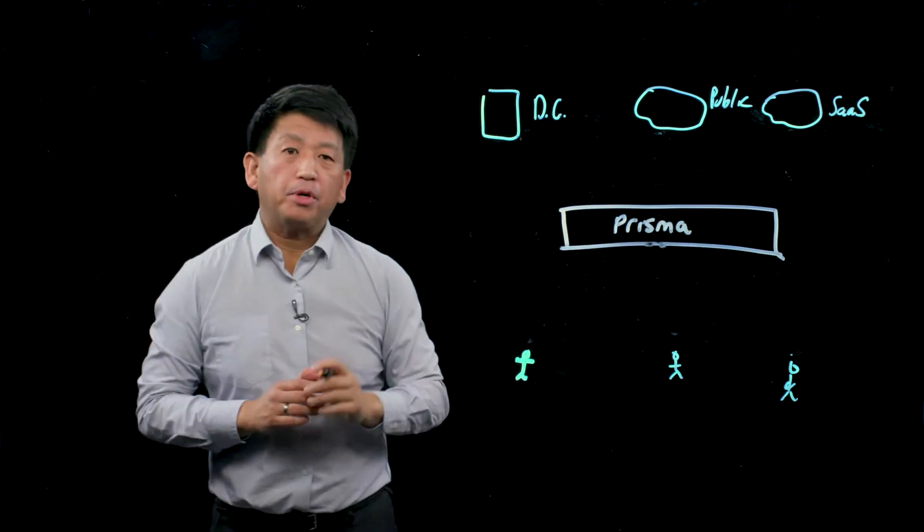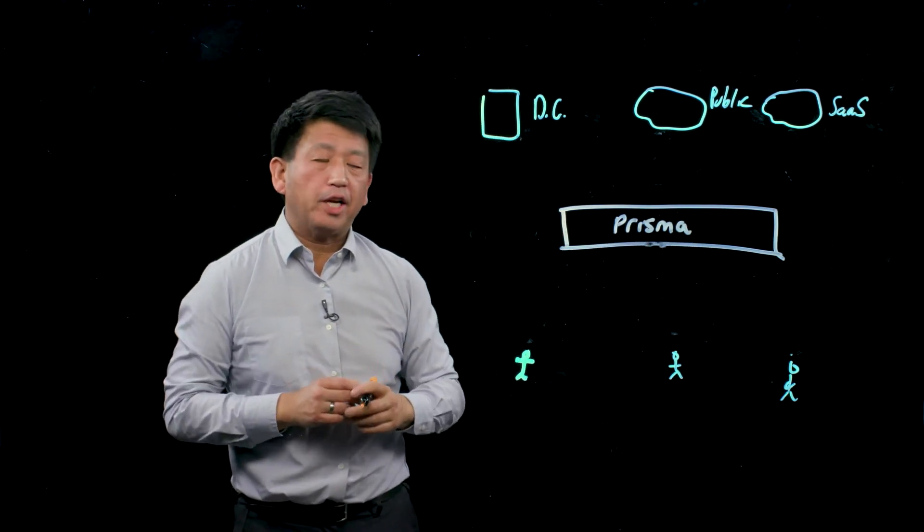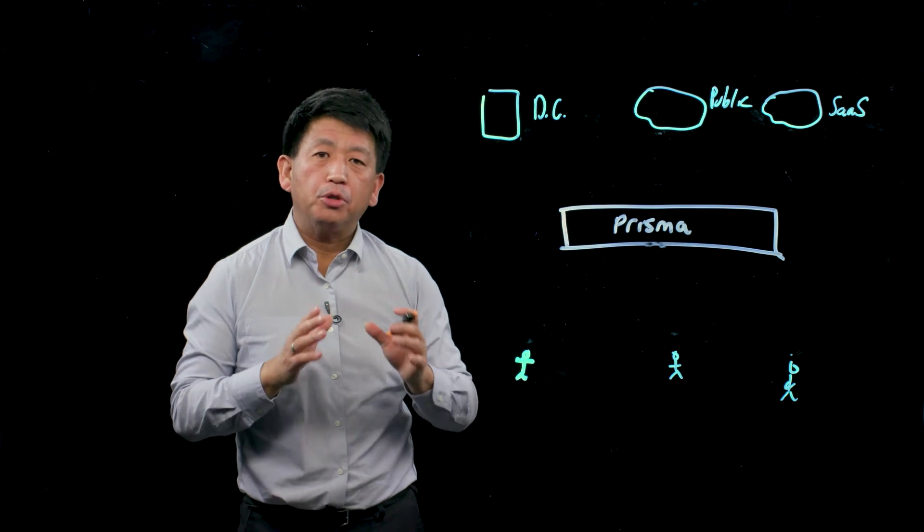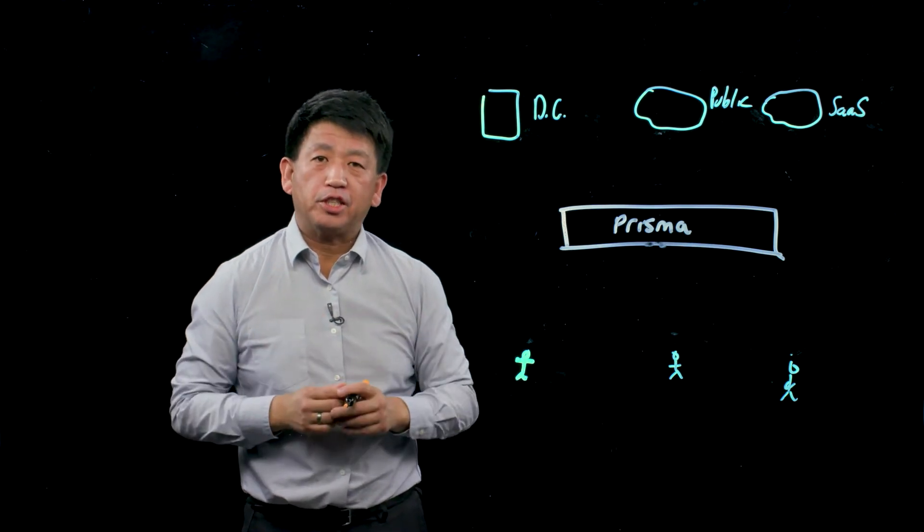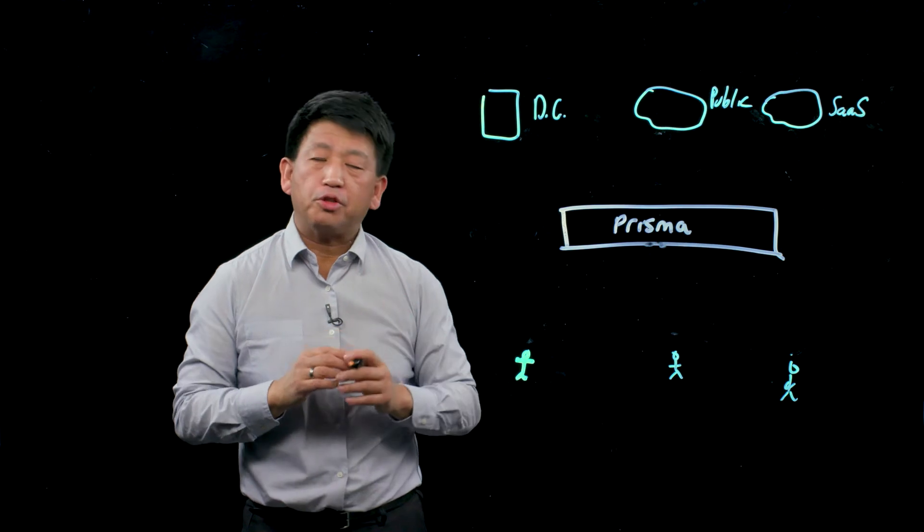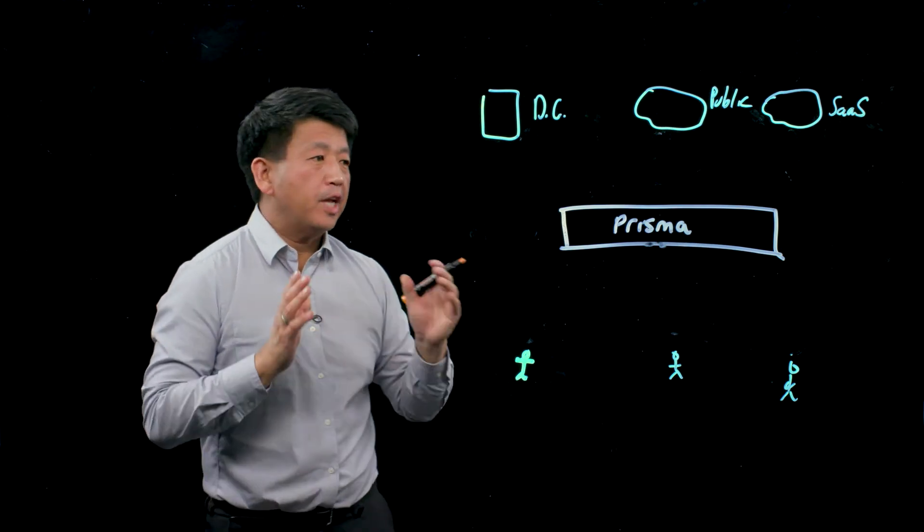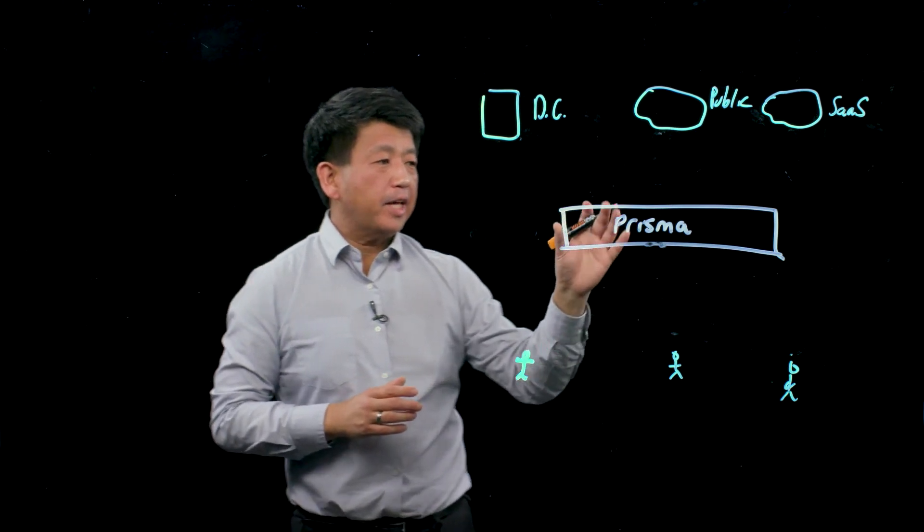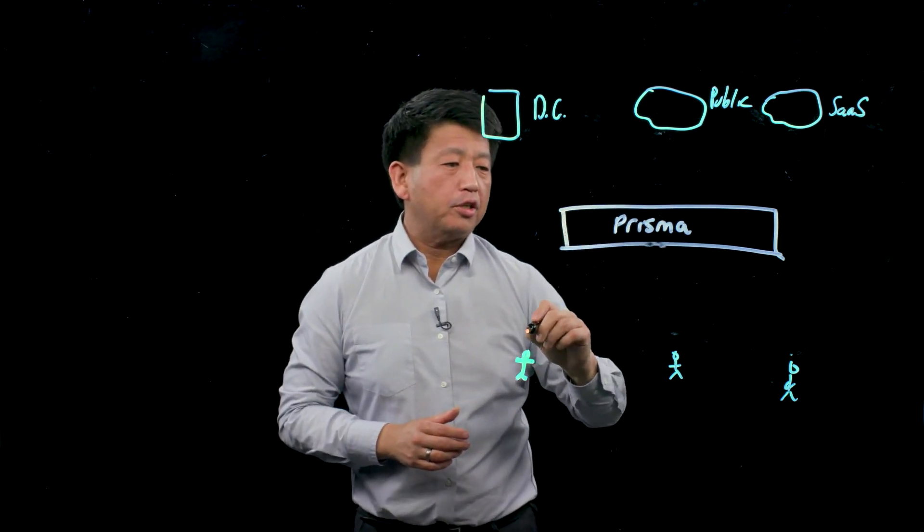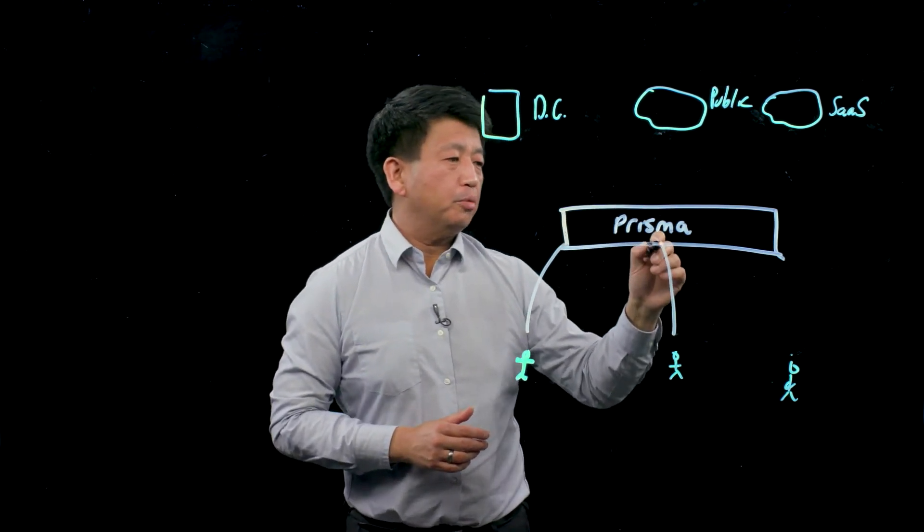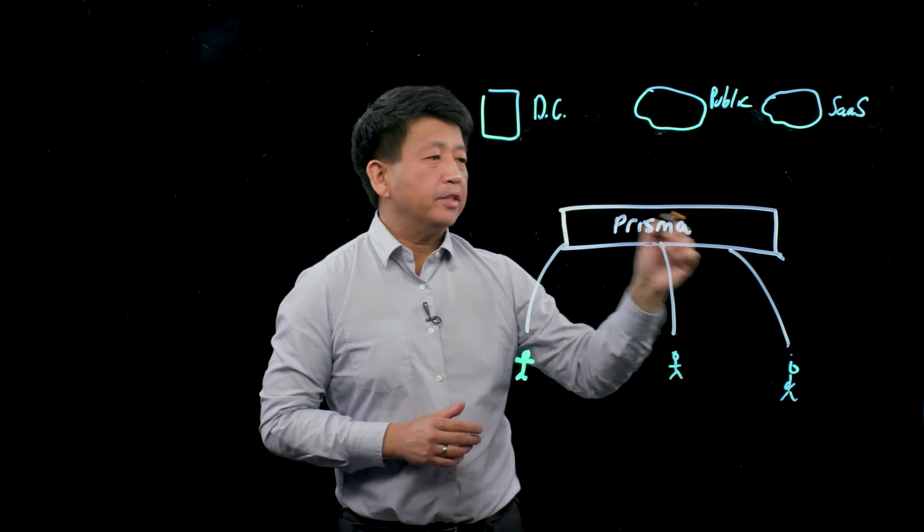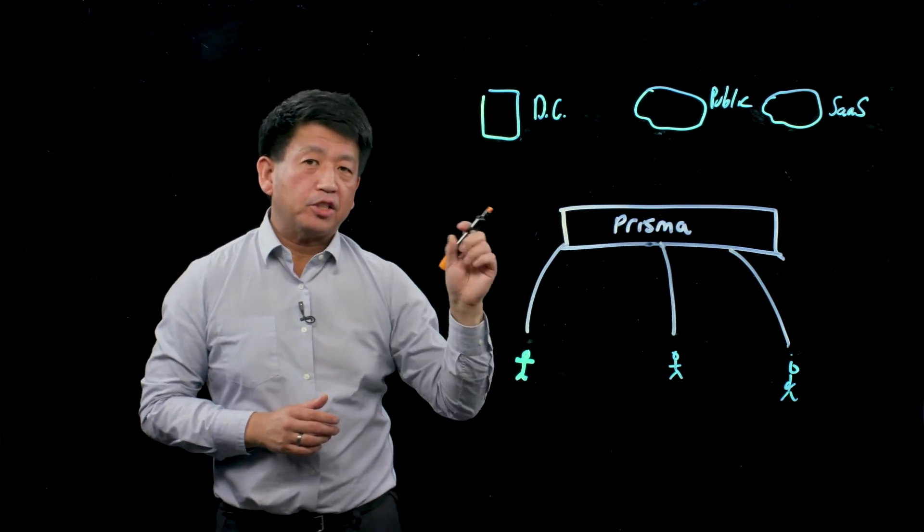Prisma uses the principles of zero trust to make sure that you always know who is accessing the applications that you have, and you stay in control of data so that you know where your data is and where it's going. With Prisma, we act as the gateway so that users can connect to Prisma and get access to the different applications they need.